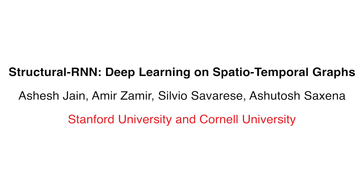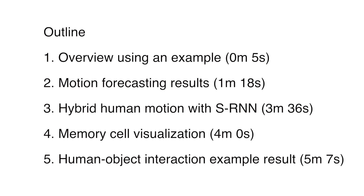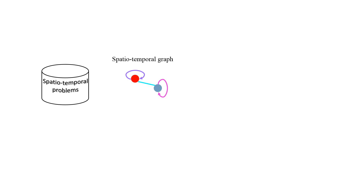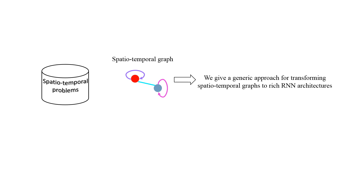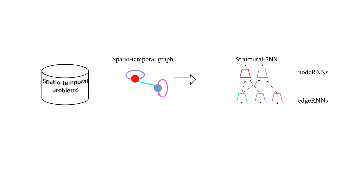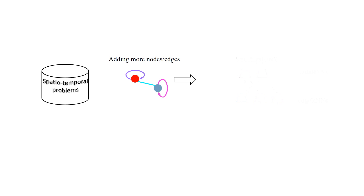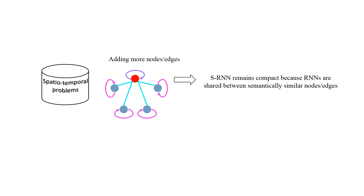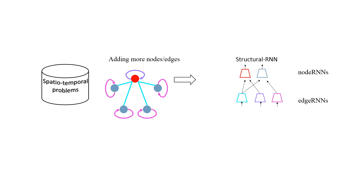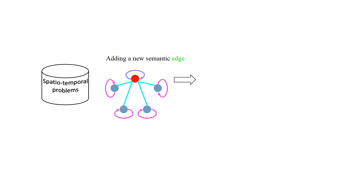Spatiotemporal problems are of broad interest to both computer vision and robotics communities. In this work, we propose a generic tool for transforming an arbitrary spatiotemporal graph into a scalable, rich mixture of recurrent neural networks. The nodes of the graph typically represent the problem components and the edges capture their spatiotemporal interactions. The nodes and edges of the same color are semantically similar. Our approach makes use of parameter sharing between semantically similar nodes and edges, and hence the architecture remains compact even when the graph grows.